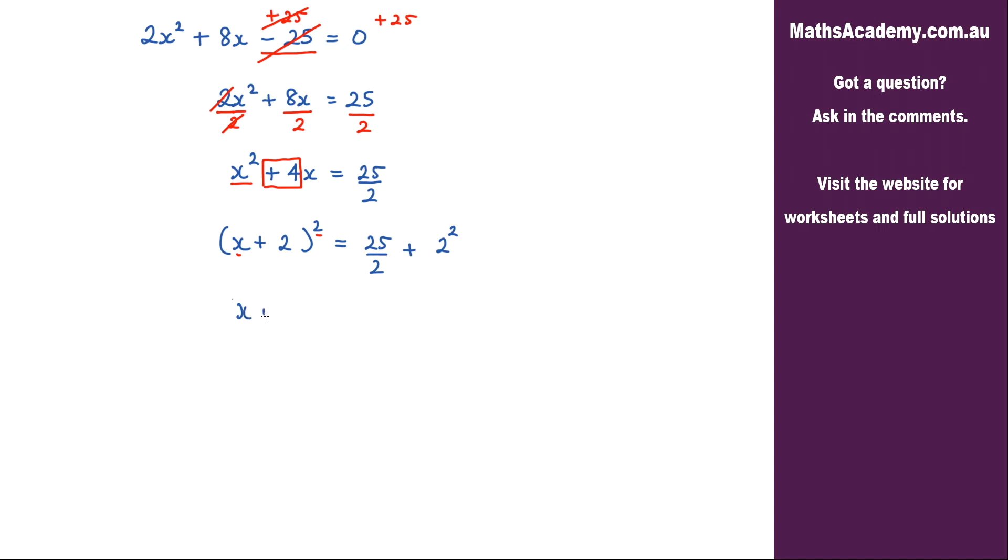So I've got (x + 2)² is equal to—now let's simplify this along here.